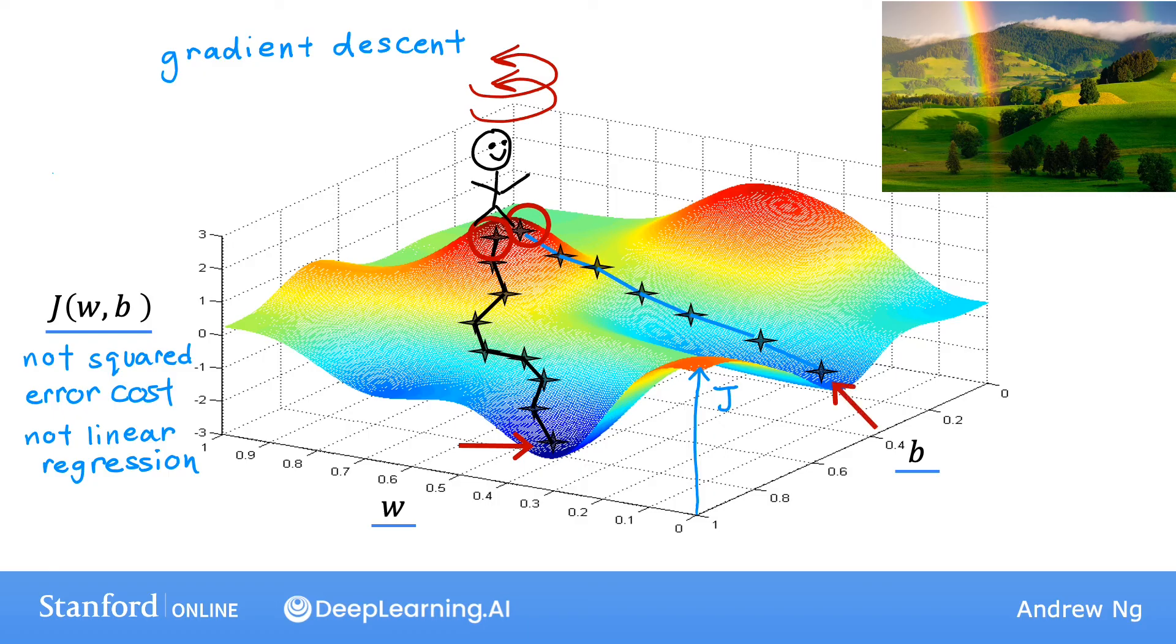This different minimum over here on the right. The bottoms of both the first and the second valleys are called local minima, because if you start going down the first valley, gradient descent won't lead you to the second valley. And the same is true—if you started going down the second valley, you would stay in that second minimum and not find your way into the first local minimum. So this is an interesting property of the gradient descent algorithm, and you'll see more about this later.